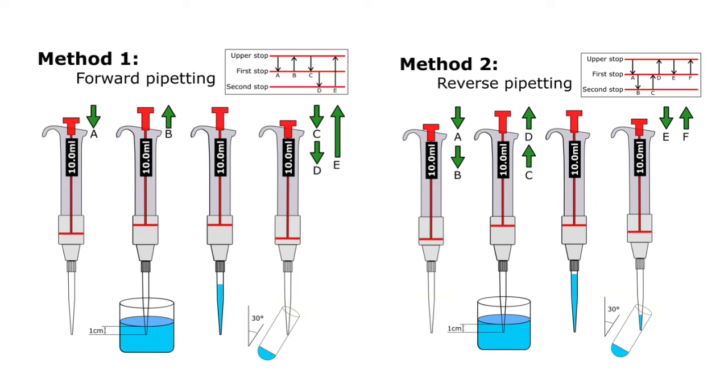So as you see, this is the difference between forward pipetting and reverse pipetting. And we can review one more time very fast. First, you have to go to the first stop, draw the liquid, and then release this liquid to the first stop and then go to the second stop. You're pushing this liquid with air that is in the tip.